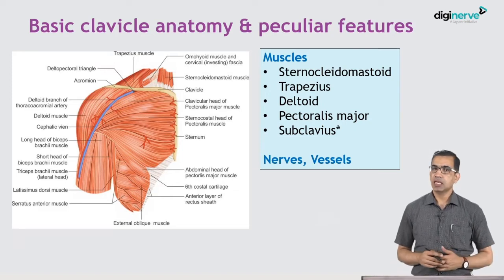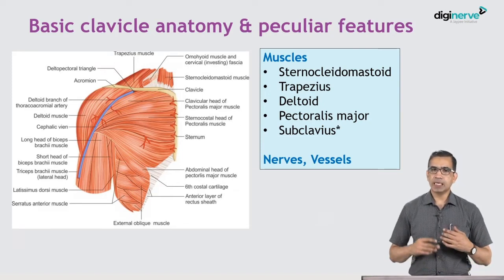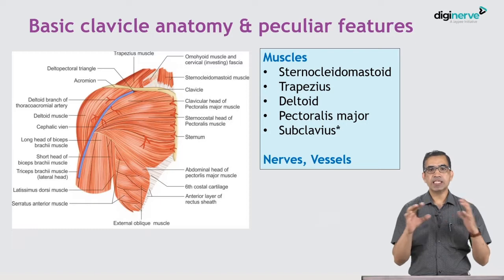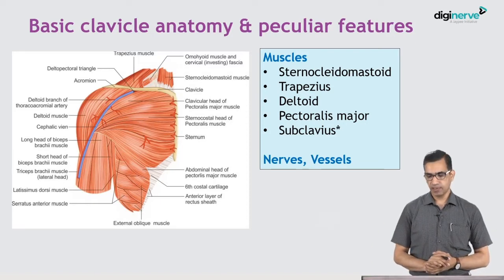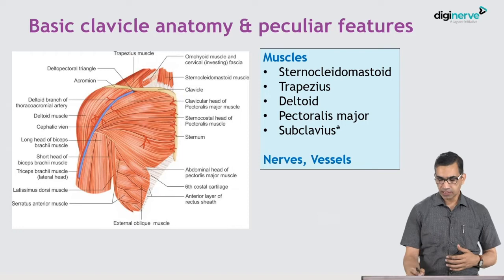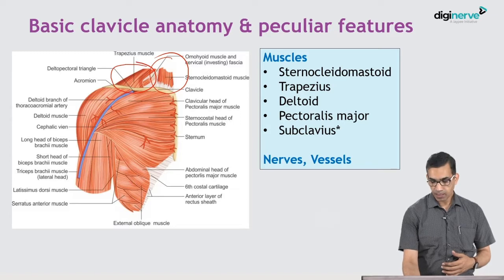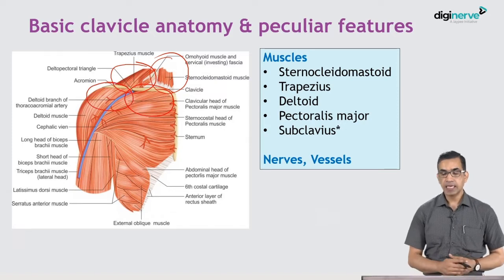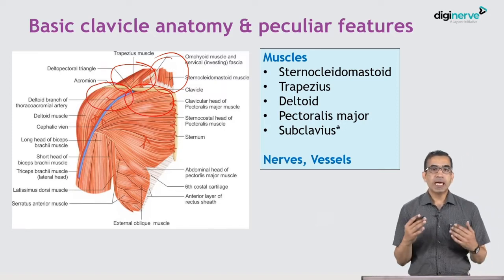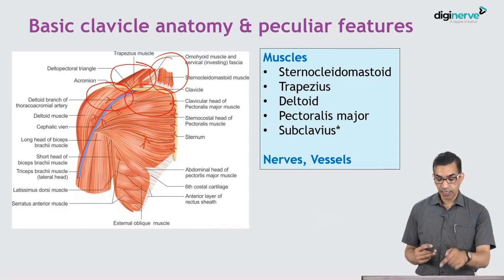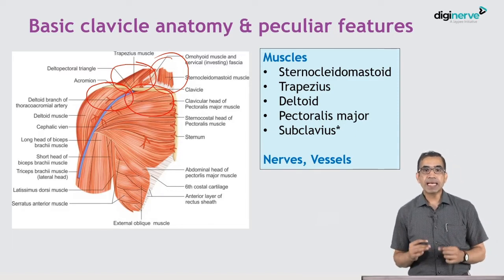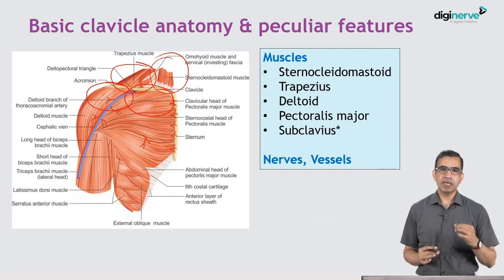Moving on with the clavicle anatomy and peculiar features, there are various muscles attached to the clavicle. They are important when it comes to understanding the displacements of the clavicle after fracture. Medially you have the sternocleidomastoid; on the lateral aspect you have the trapezius; on the medial lower part you have the pectoralis major; and laterally on the lower part is the deltoid.